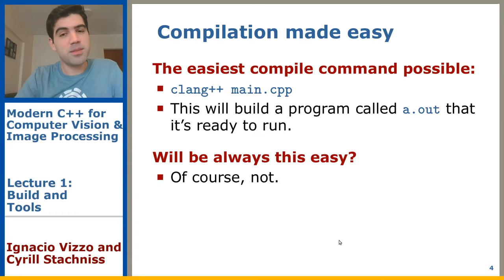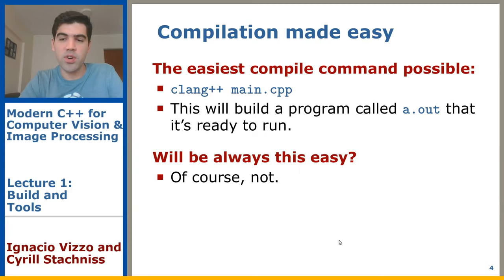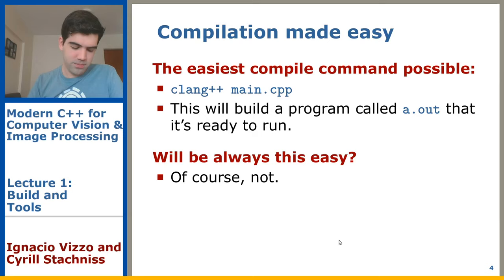The easiest way to compile a C++ program is just calling the compiler. In our course we will be using Clang. This will basically build a program using the default name a.out. If everything is working — meaning the compiler is properly installed and all the system libraries are there — then you're ready to go. That's the whole thing you need to know about compilation. This is something we tested in the previous lecture on the Hello World example.